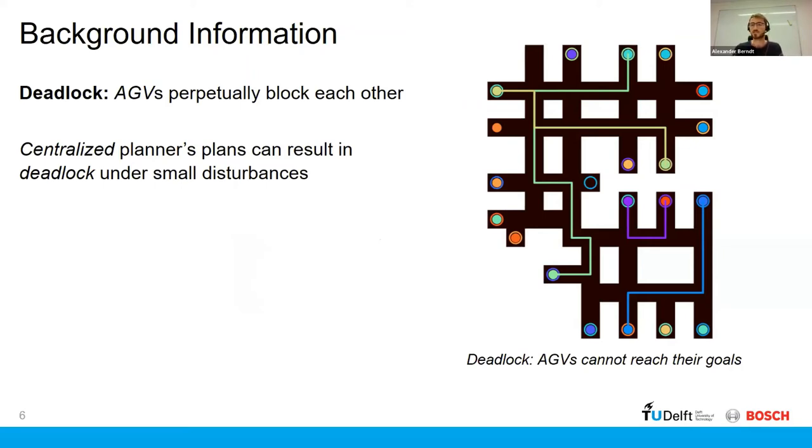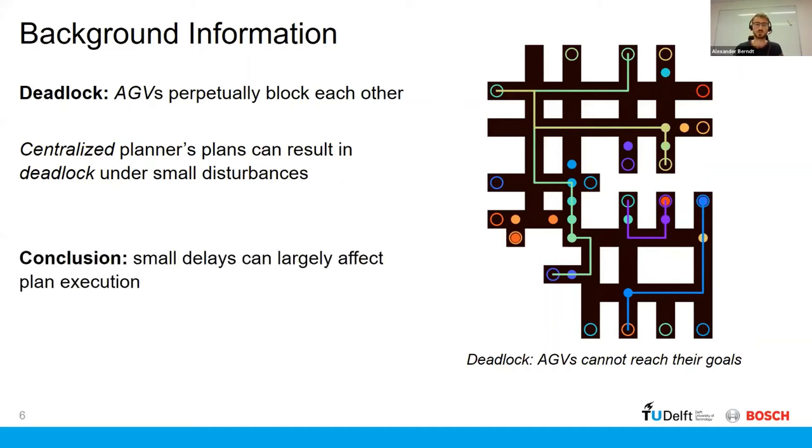So on the right, I've shown pretty much the scenario that I showed previously, but now I've just delayed two of the AGVs by a single time step, and you'll see that almost none of the AGVs reach their final goal, because they are in some deadlock situation. So the conclusion here is that even small delays can largely affect plan execution.